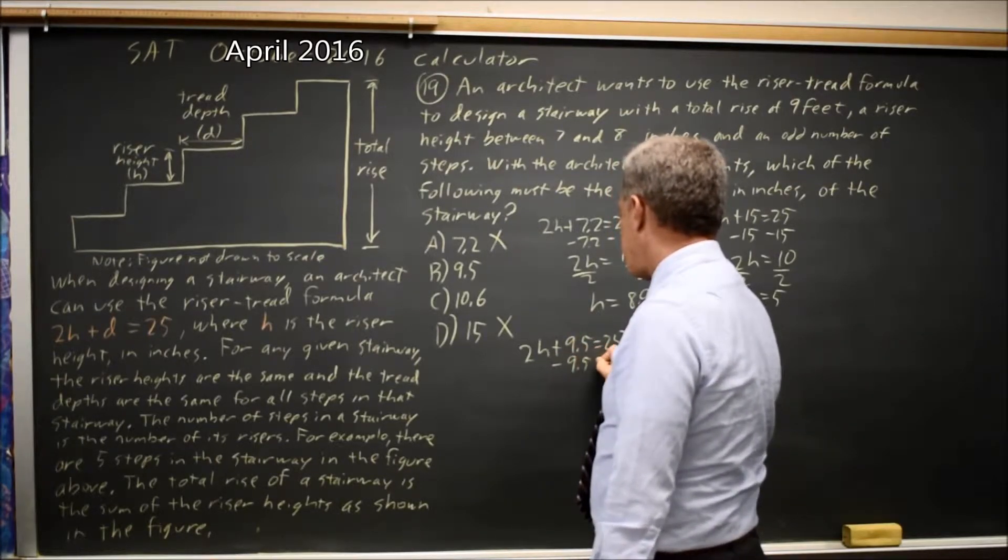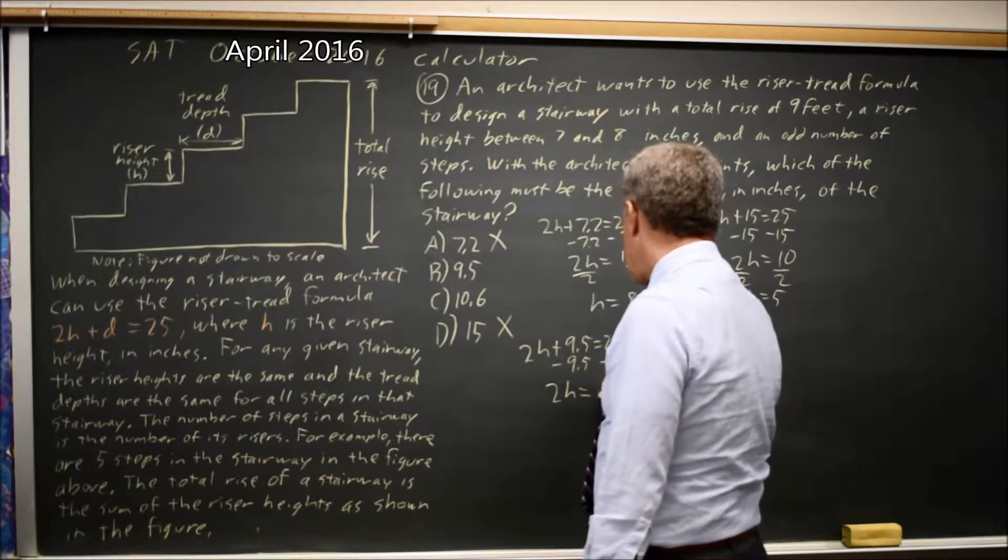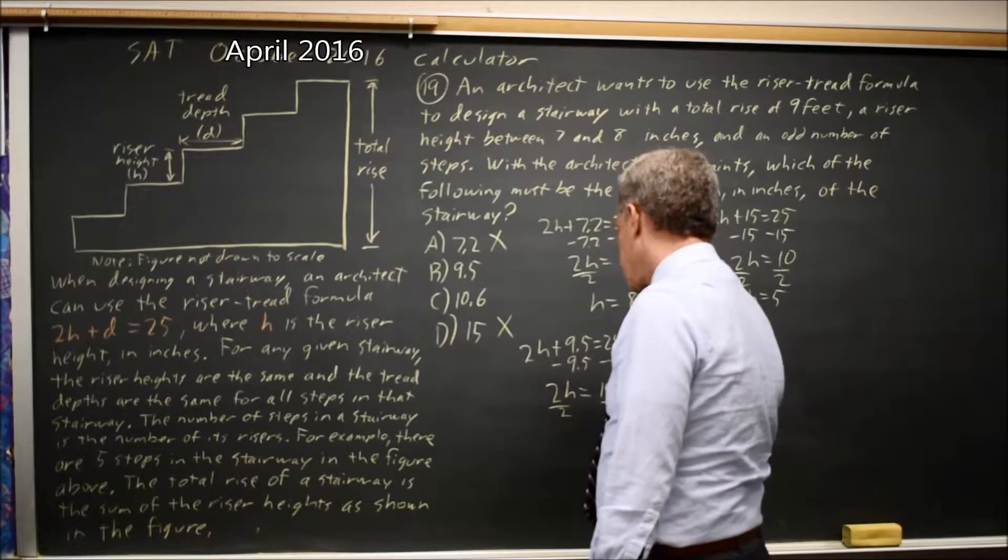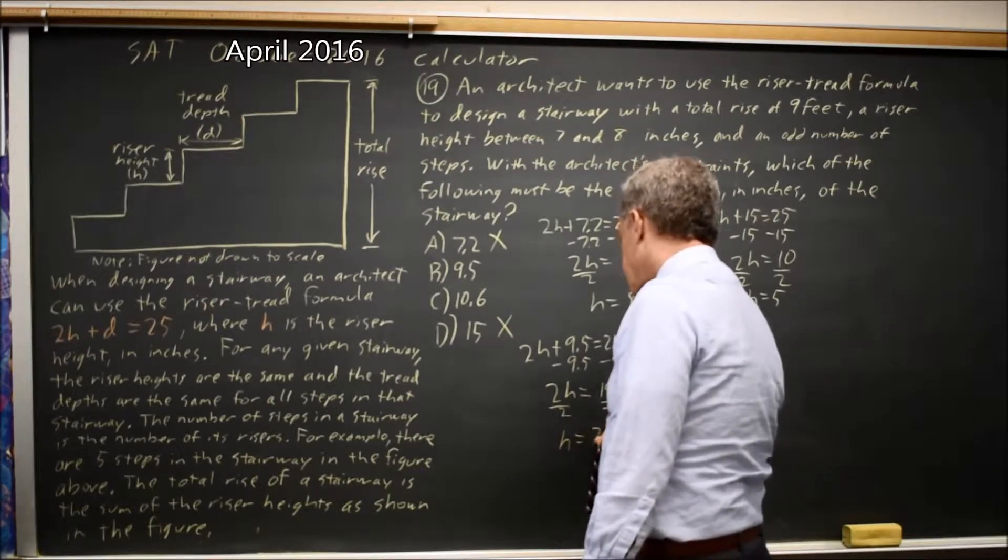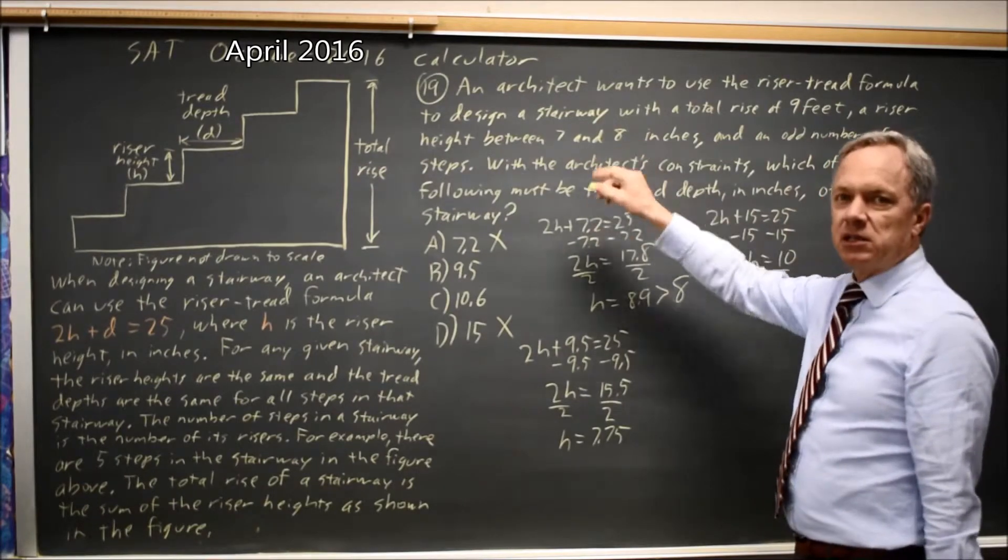Subtract 9.5 from both sides. 2H equals 15.5. Divide by 2. H equals 7.75, which is between 7 and 8. So that works.